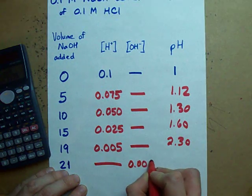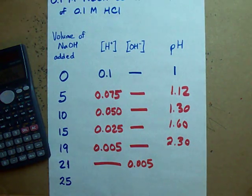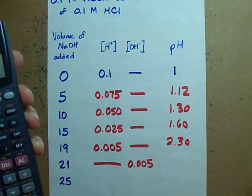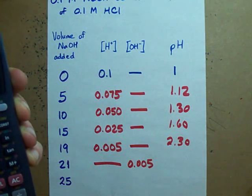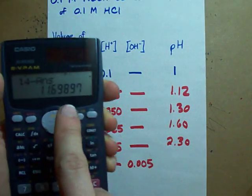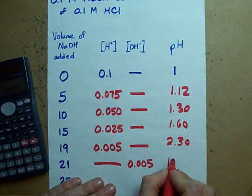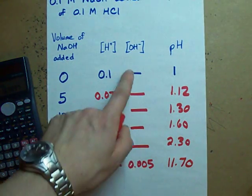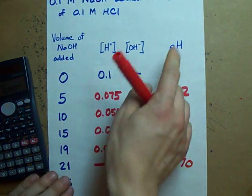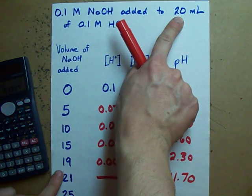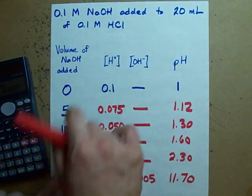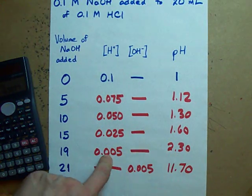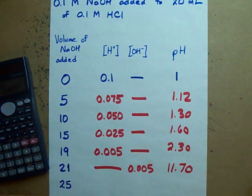What that means is that my pH is now negative log 0.005. Well, that's my pOH. My pH is now 11.7 because my OH concentration is now what's dominating and it's a strongly basic solution. Notice that at the equivalence point, when I added exactly 20 of base, when I started with 20 of acid, I went from an acidic solution with a pH of 2.3 to a basic solution with a pH of 11.7.